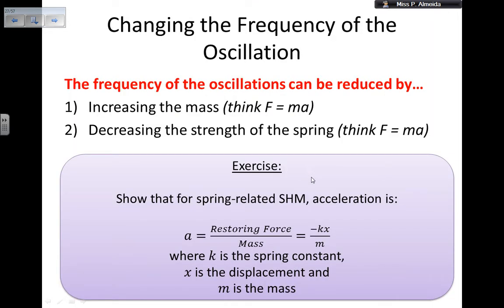If you want to change the frequency of the oscillation, there are two ways. If I want to reduce it, I can increase the mass — think about F = ma: if I increase the mass, my oscillations are reduced in frequency. And if I decrease the strength of the spring, again using F = ma, I'm also going to reduce the frequency of oscillations — the object cannot move back and forth as fast.